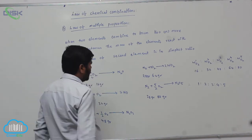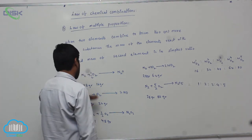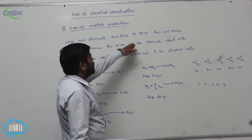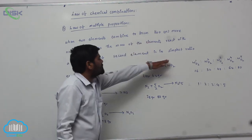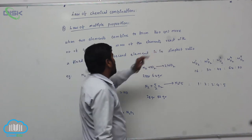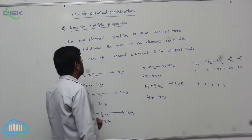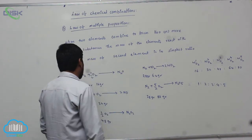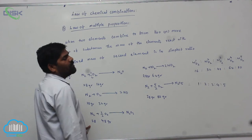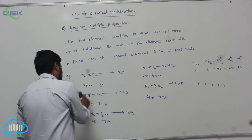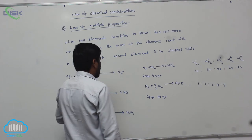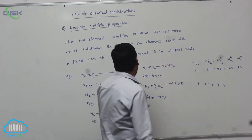If any two elements are combined to form two or more compounds — in this case nitrogen and oxygen — the mass of one element that reacts with a fixed mass of the second element varies. The mass of nitrogen is fixed, but the mass of the second element (oxygen) changes. The masses of the varying element are always in a simple whole-number ratio.